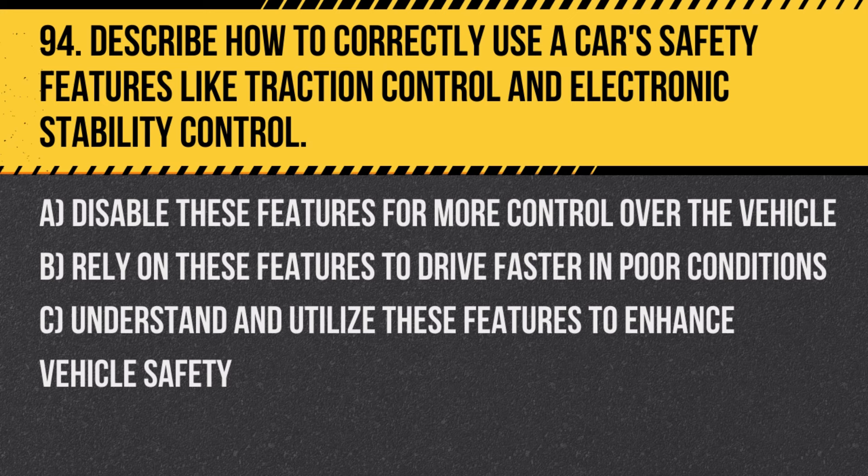Question 94: Describe how to correctly use a car's safety features like traction control and electronic stability control. A. Disable these features for more control over the vehicle. B. Rely on these features to drive faster in poor conditions. C. Understand and utilize these features to enhance vehicle safety. Answer: C. Understand and utilize these features to enhance vehicle safety. These systems are designed to improve stability and traction during challenging driving conditions.